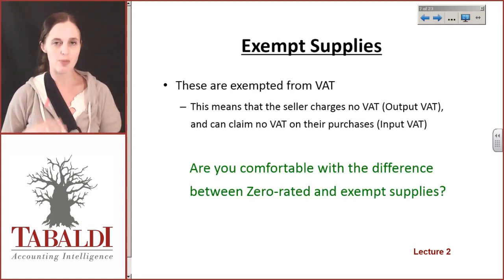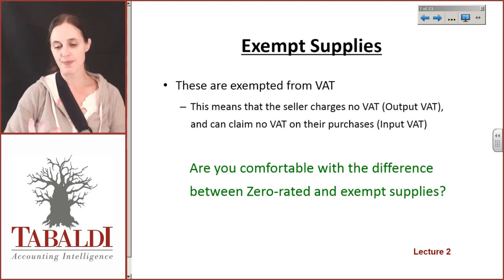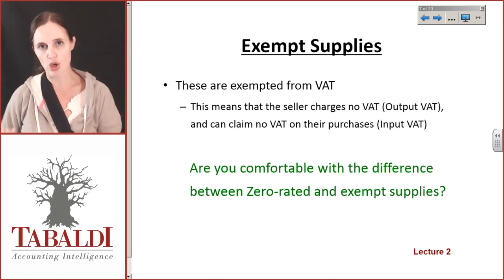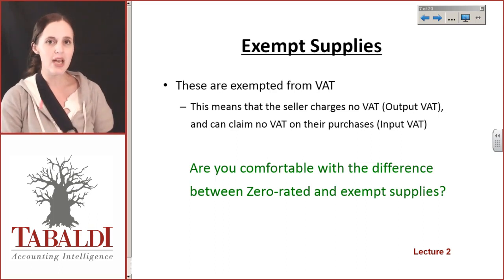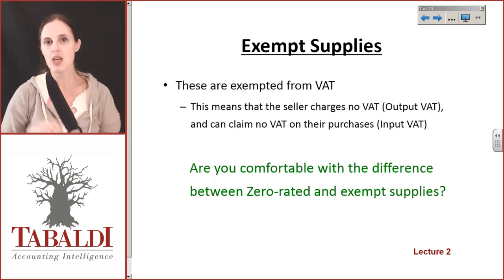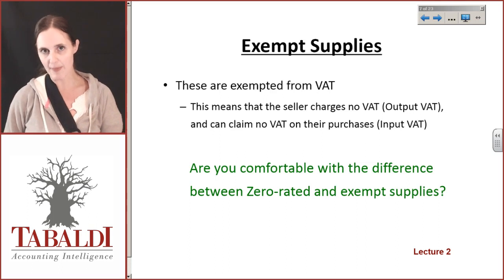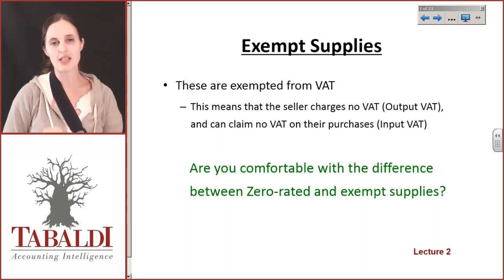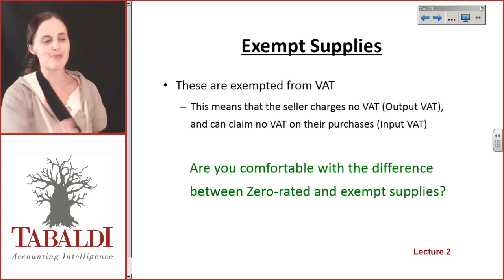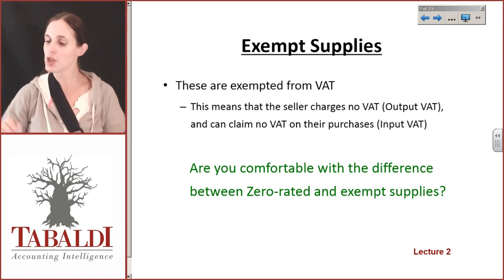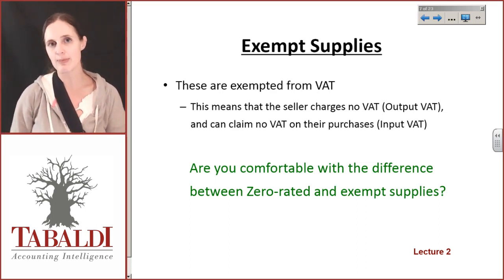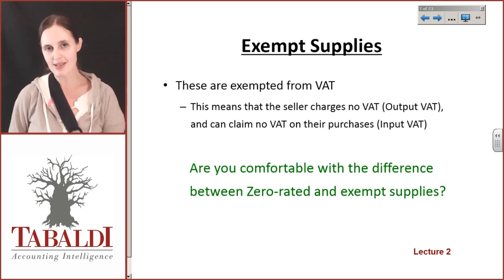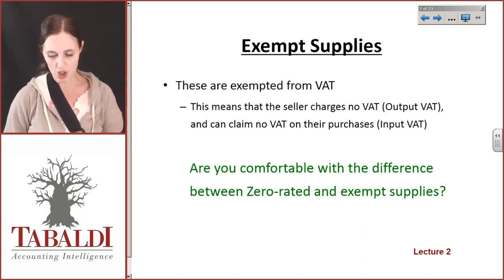That's quite different to exempt supplies — supplies that are not taxable. These are exempted from VAT entirely, meaning when you sell them you charge no VAT, and you also cannot claim any VAT on your inputs. So when I buy stuff and have to pay VAT to other people, I can't claim that, and I don't charge VAT on sales either. The difference: zero rated means I don't charge VAT on sales but I can still claim VAT on purchases. Exempt means I don't charge VAT on sales and I can't claim VAT on purchases either.